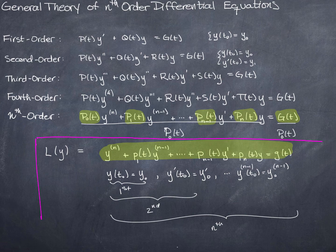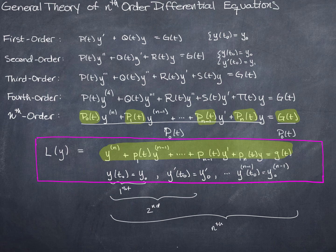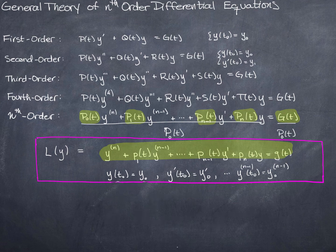We call this an initial value problem when an adequate number of initial conditions are given so that we can solve it right down to the last constant of integration — we know what every constant of integration is. If we have enough initial conditions, we can solve an equation like this outright. We can refer to Theorem 3.2.1 from the previous chapter, which guarantees that this initial value problem has a unique solution.